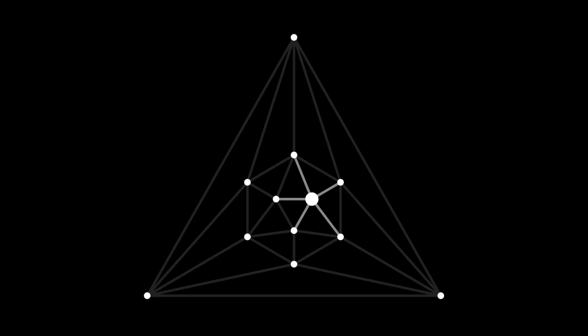One color — let's suppose it's red — appears just once. Its neighbors have to be different colors. And that tells us how to color all the edges around the marked vertex, and then all the faces around that vertex.